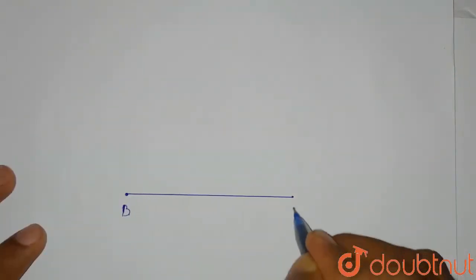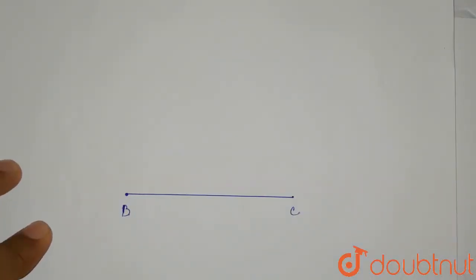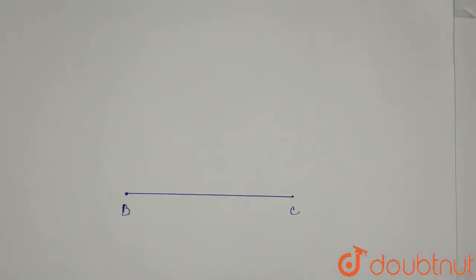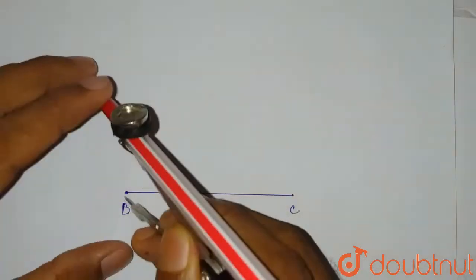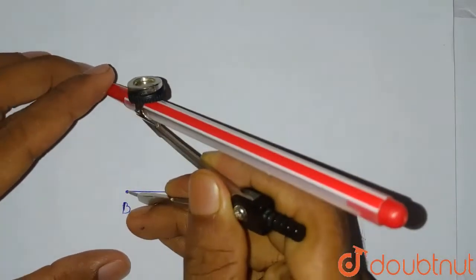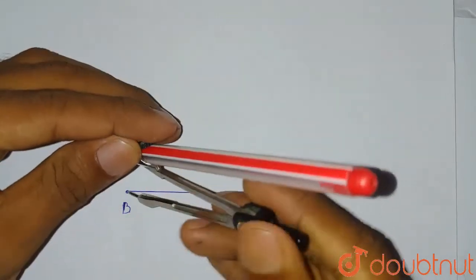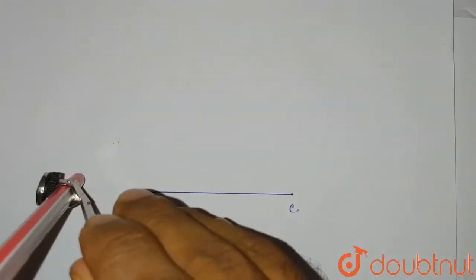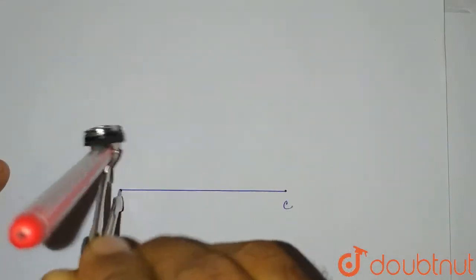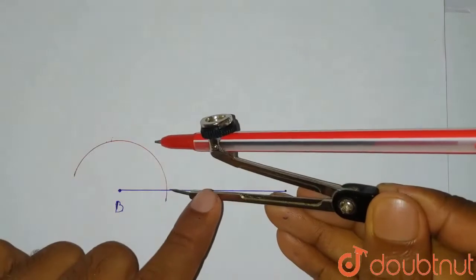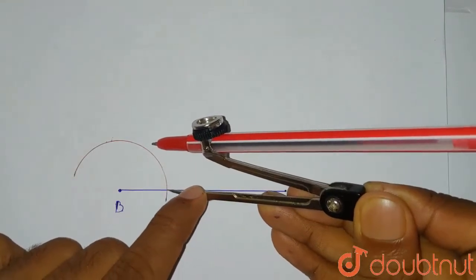It is given that angle ABC is 90 degrees, so there will be a line at 90 degrees at point B. To draw the 90 degree angle, we place our compass at point B, take a small radius, and draw an arc. From this intersecting point, we place the compass again and draw another arc.